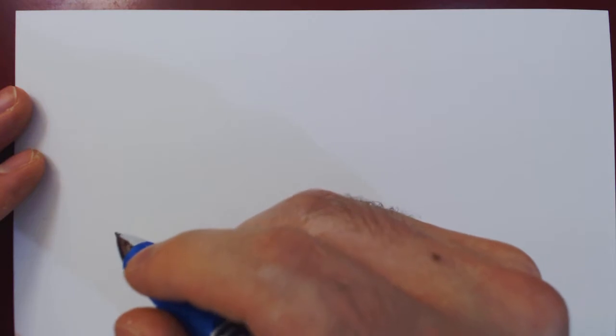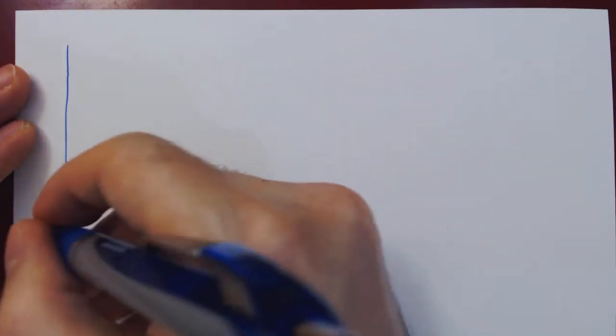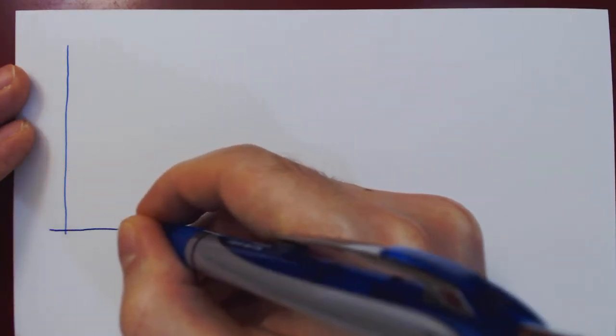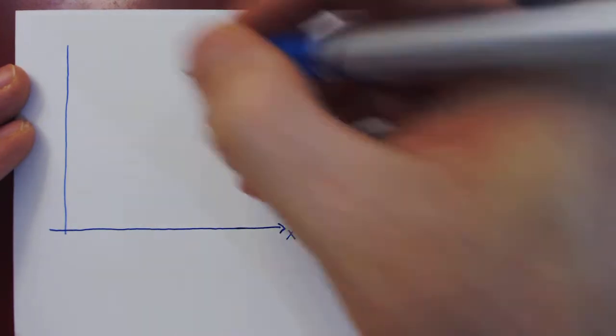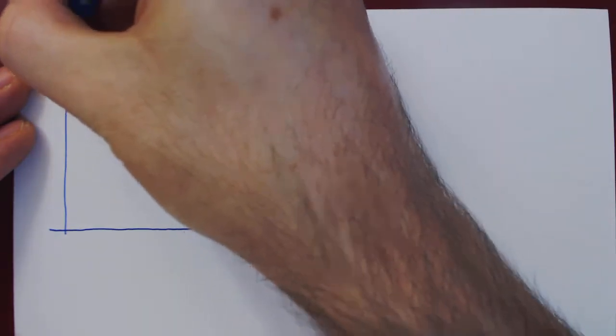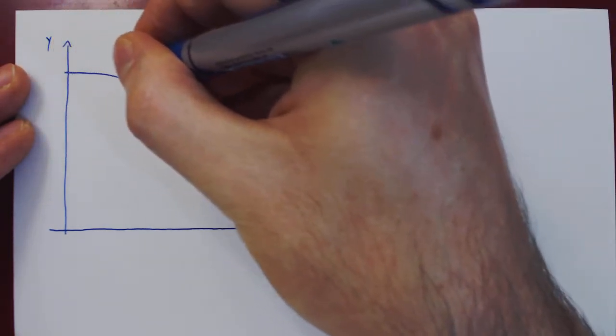The proof is very simple, but as you will see, relies on a fairly clever geometric construction. So let's consider in the x-y plane the portion of the unit circle in the first quadrant — simply the quarter of the unit circle, which is a circle of radius 1.